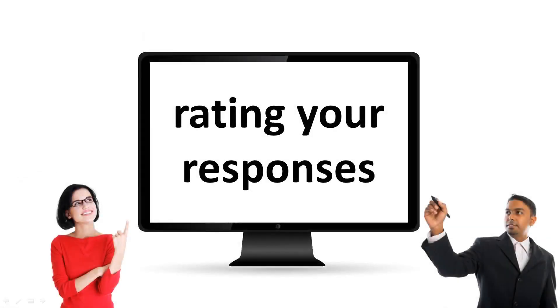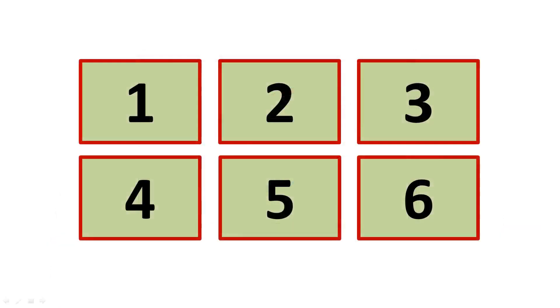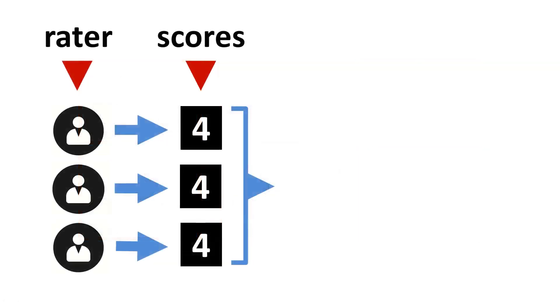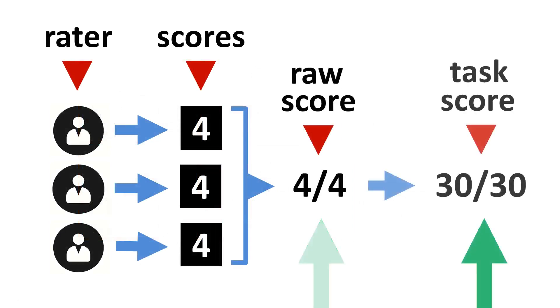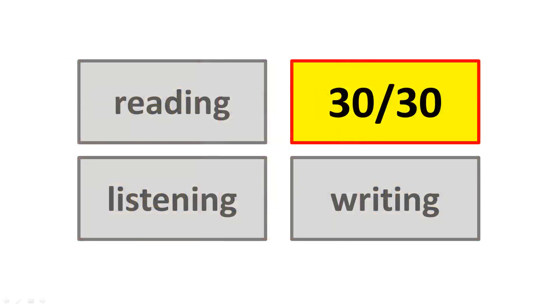Now let's talk about rating your responses. ETS says that each speaking task will be rated by three human raters. For each task, the three raters' scores will be averaged for a raw score out of four total points. Each raw score will then be converted to a task score out of 30 points. The six task scores will be averaged for a final section score out of 30.